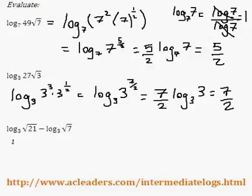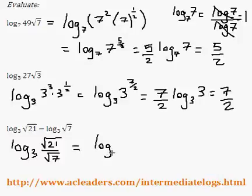How about this guy? So log base 3 of root 21 minus log base 3 root 7. Right away, we can actually combine the logs and divide the contents. And if we have a root divided by a root, we can actually combine them.